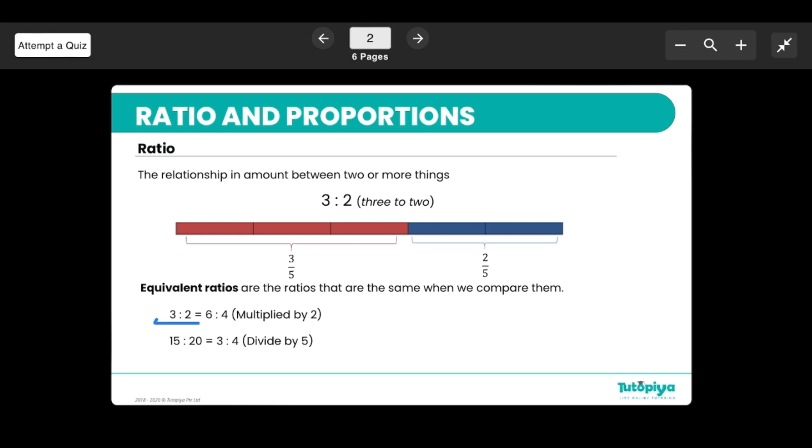For example, if you have a ratio 3:2, then if you multiply both sides by 2, this ratio becomes 6:4, so both of these are considered equivalent ratios. Similarly, if we have a ratio 15:20, then when you divide both sides by 5, this results in 3:4, which is also an equivalent ratio.